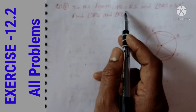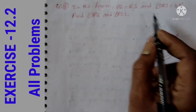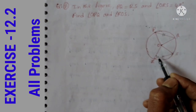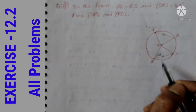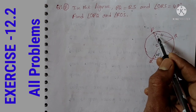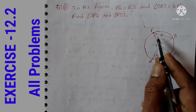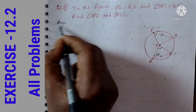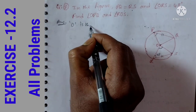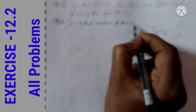Question number 2: In the figure, PQ is equal to RS — we have equal chords. Angle ORS is equal to 48 degrees. Find angle OPQ and angle ROS. O is the center of the circle.